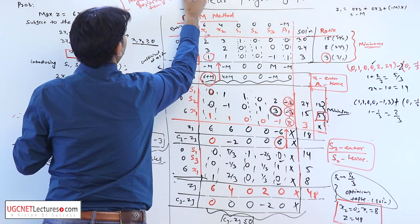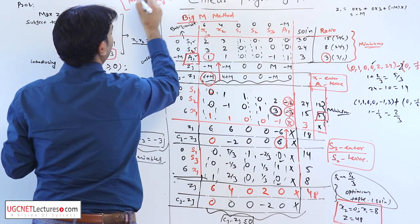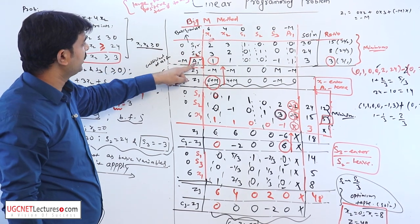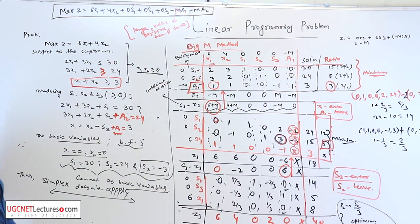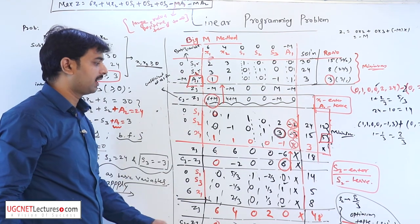And now s1, s2, a1, and a2 are the basic variables. Solving by similar approach, we find the optimum solution of this kind of problem.